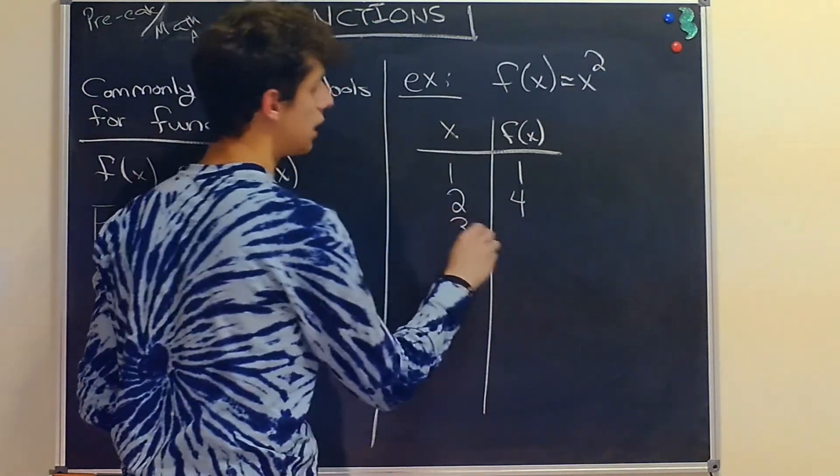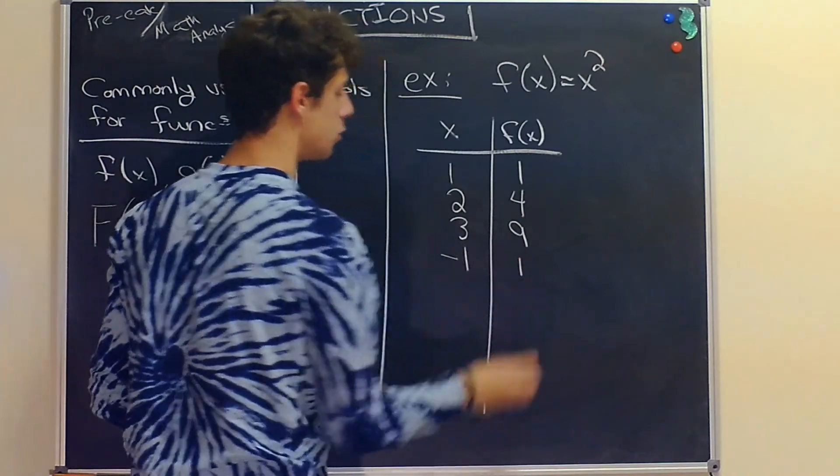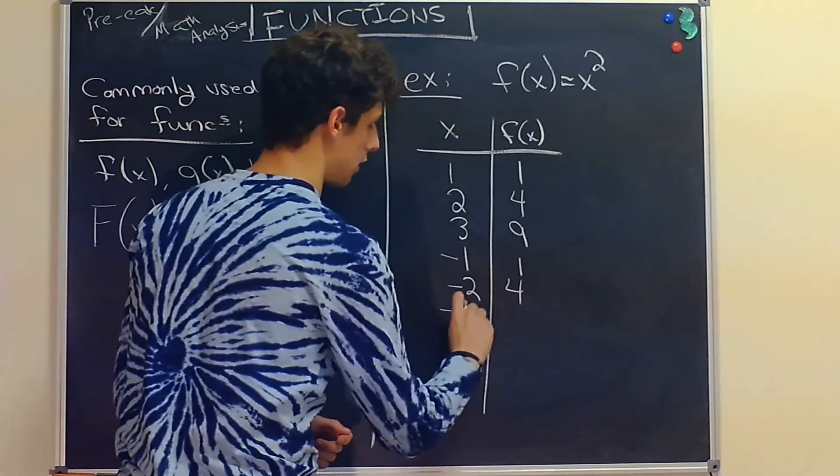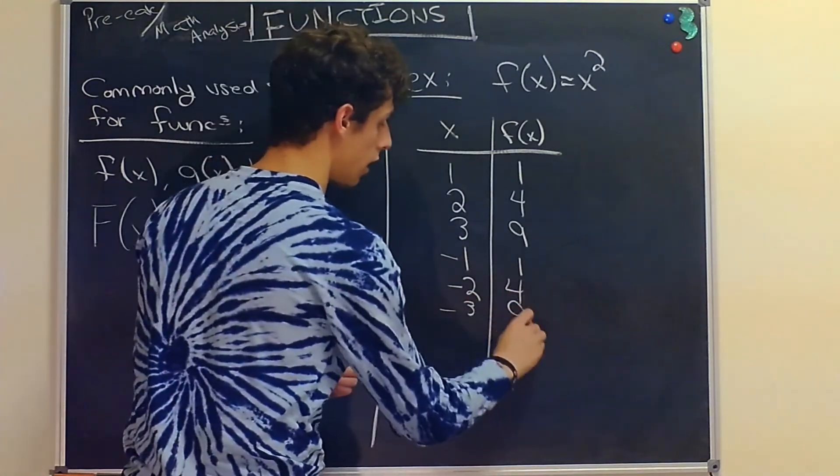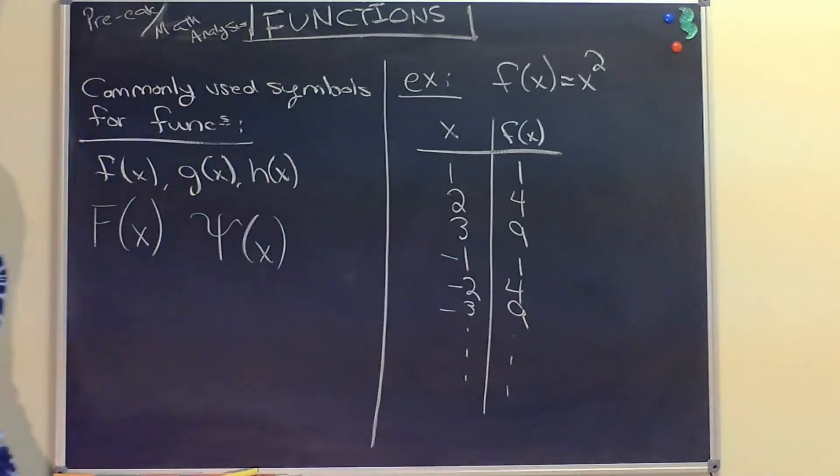For negative numbers, we get (-1)² = 1, (-2)² = 4, (-3)² = 9, and so on. We can do this for all inputs and outputs.